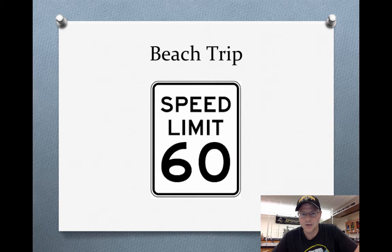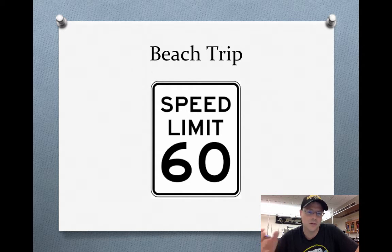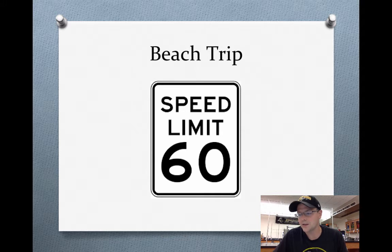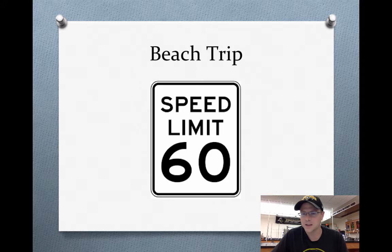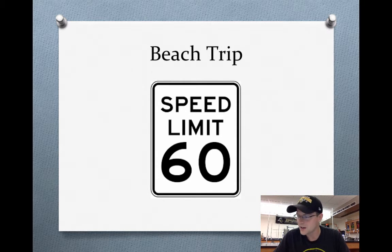In your guided notes there's space to write what you got out of my beach trip example. Here's the example: say I was heading to the beach this summer and the beach is 200 miles away. If I wanted to get there at a speed of 60 miles an hour, I would have to get there in three hours. So 200 miles, three hours — I get pulled over, and the cop starts writing me a ticket for speeding. I said, 'What do you mean, officer? The speed limit sign says 60 miles an hour. I am 200 miles from the ocean and it took me exactly three hours. Why am I speeding?'